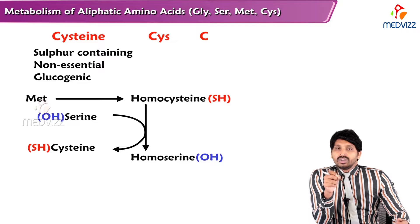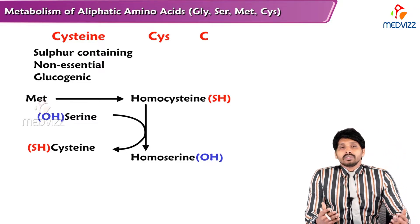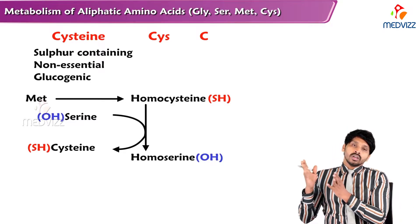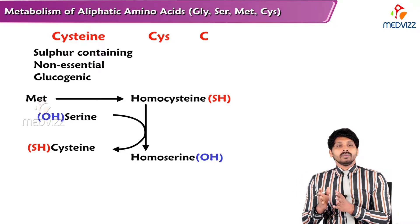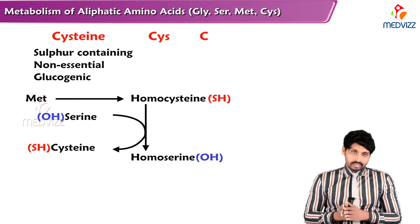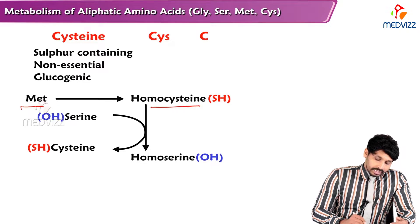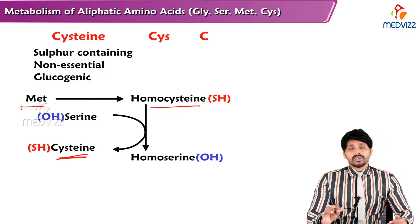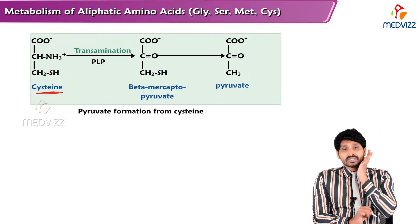From methionine metabolism, we have seen that cysteine can be formed from methionine. Methionine is converted to homocysteine, homocysteine combines with serine to form cystathionine, and cystathionine by the enzyme cystathionase is converted to cysteine. So the two key enzymes in the making of cysteine are cystathionine synthase and cystathionase.